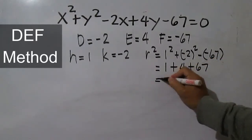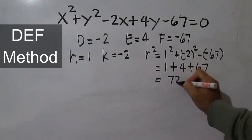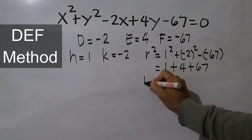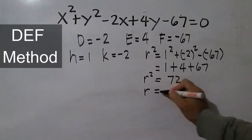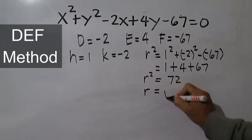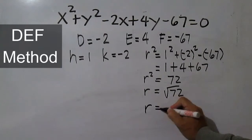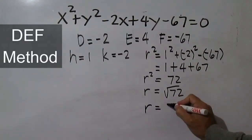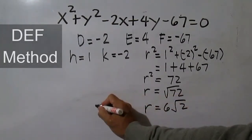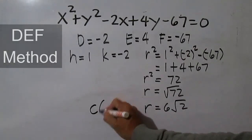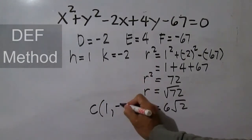This is equal to 1 plus 4 plus 67, which equals 72. So r squared is 72, and r is just the square root of 72, which equals 6 times the square root of 2. The center is at (1, negative 2).